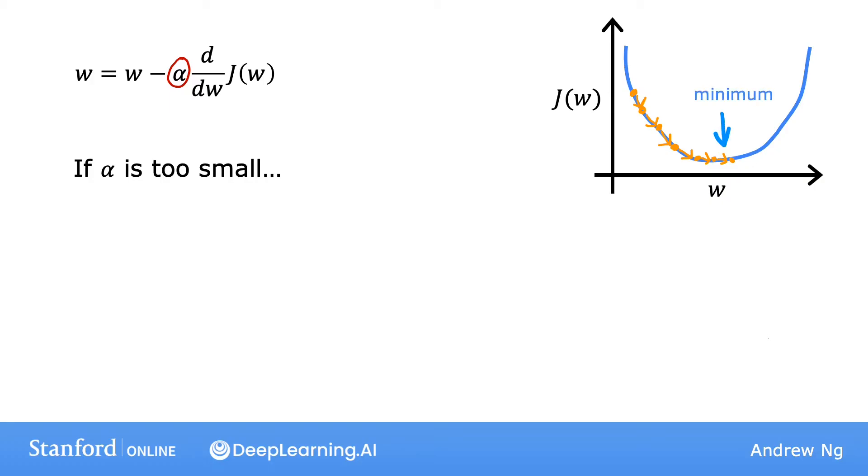But as you may notice, you're going to need a lot of steps to get to the minimum. So to summarize, if the learning rate is too small, then gradient descent will work, but it will be slow. It will take a very long time because it's going to take these tiny baby steps, and it's going to need a lot of steps before it gets anywhere close to the minimum.